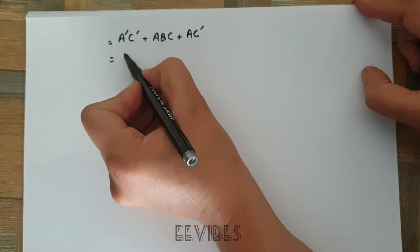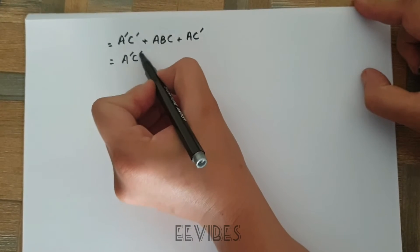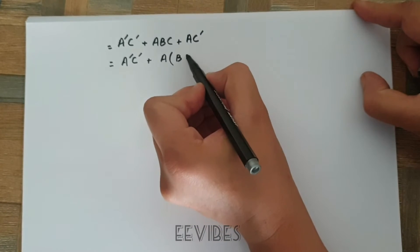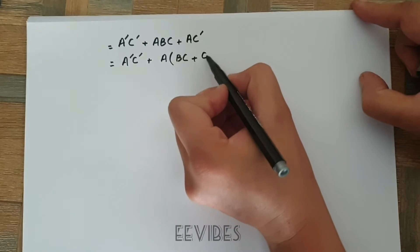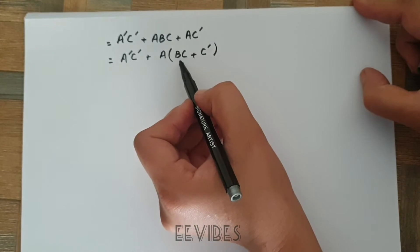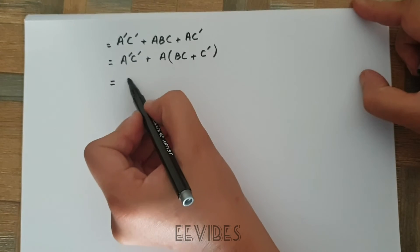First of all, the first term is written as it is, and you can take A common from here. The remaining terms that you will have in the bracket are BC plus C complement.